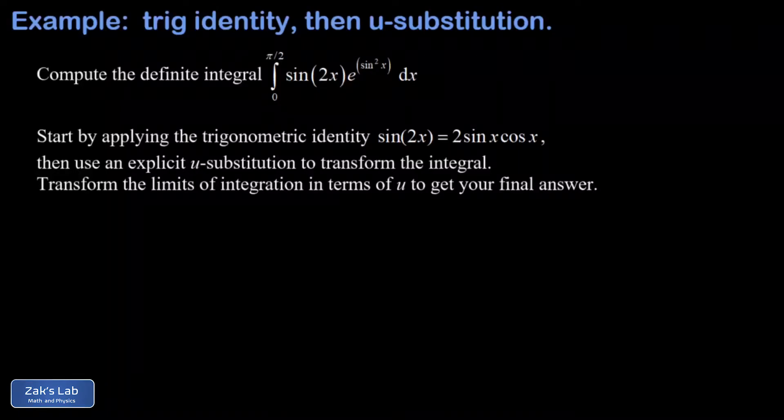In this video, we're computing a definite integral of sine 2x times e to the sine squared x. And we're given instructions on how to approach the problem here. We're asked to apply the trig identity sine 2x is 2 sine x cosine x. So that's going to transform this first part of the integral.